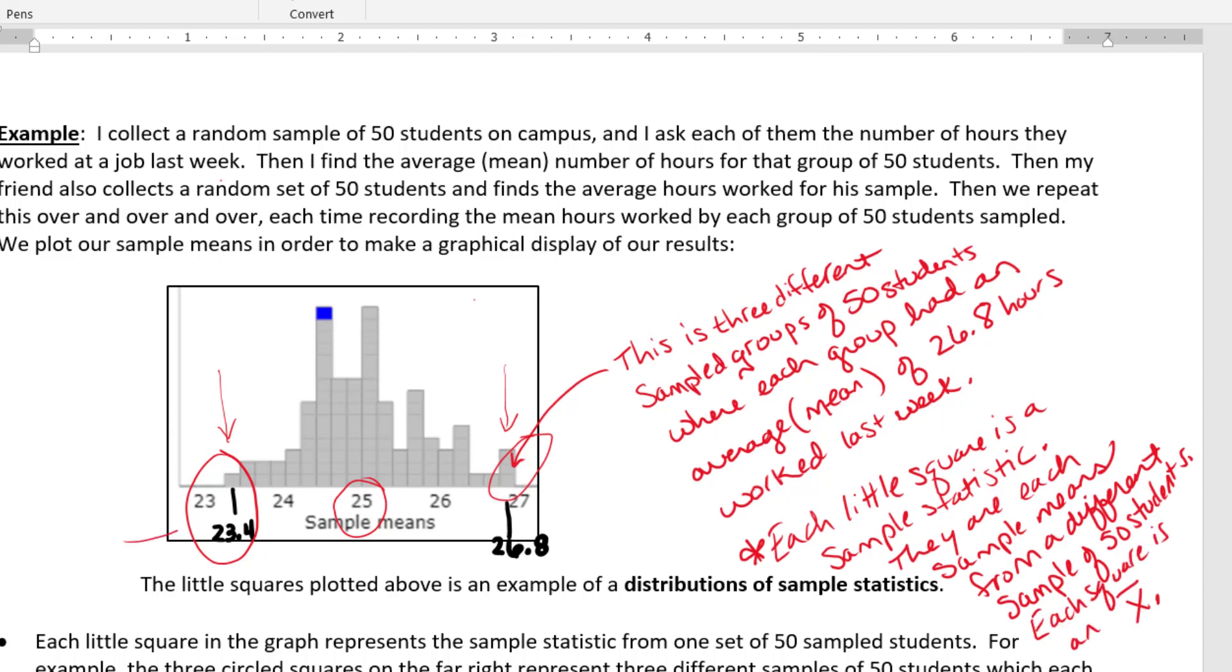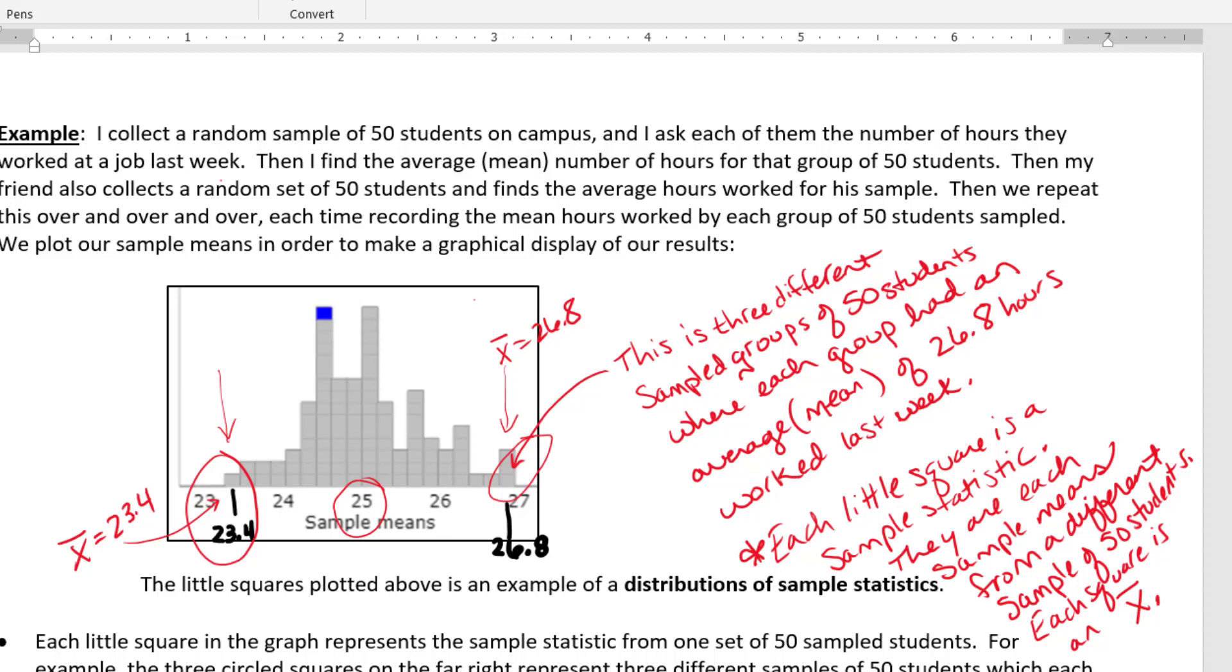So this is X-bar equals 23.4. Three times we got X-bar equals 26.8. Three different times when we did the calculation to find the average, we got an X-bar of 26.8 hours per week worked on average.